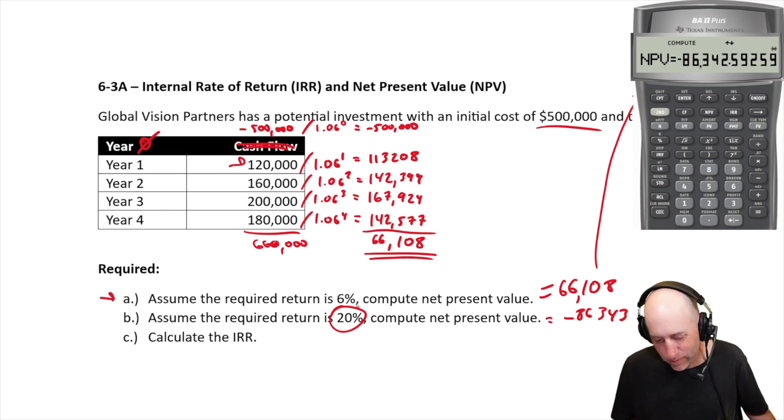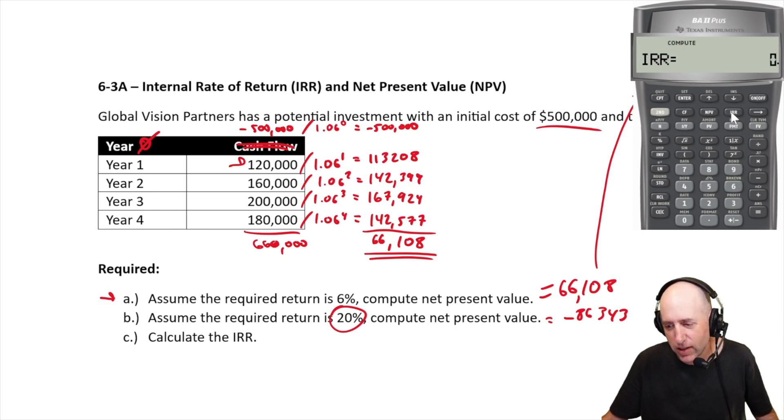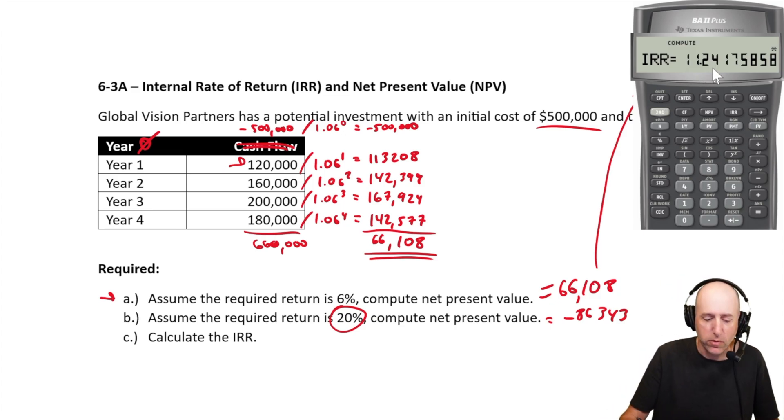You know, what's it going to be like 12% or 11%? I don't know. But because I have a financial calculator, it's easy. I've got a button marked IRR. Let's hit it. IRR equals, and it says, well, why don't you compute? So, let's compute. 11.24%.